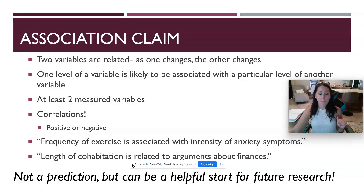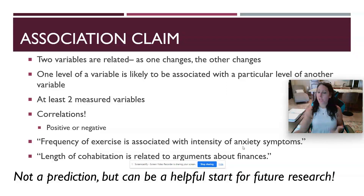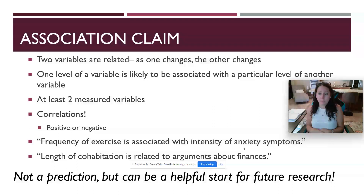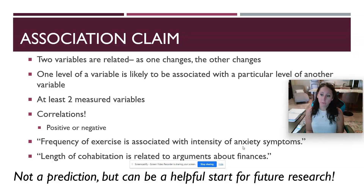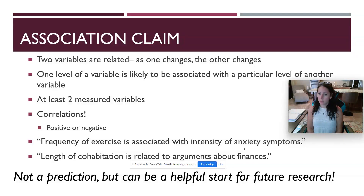Association claims are not predictions, but they can be a helpful start for future research. Let's say I find a negative correlation between anxiety symptoms and frequency of exercise — as anxiety symptoms decrease, exercise increases; as exercise decreases, anxiety symptoms increase. This can be a helpful start because maybe I want to see which direction this is going. Frequency of exercise is something I as a researcher could easily turn into a manipulated variable — I could randomly assign people to groups. But for now, that's what an association claim is: they are related, but we cannot say cause and effect.